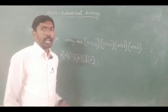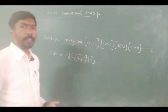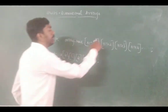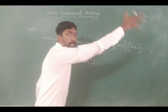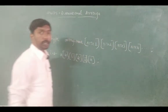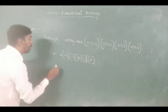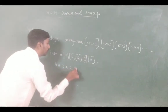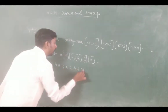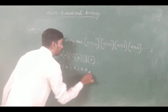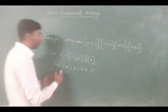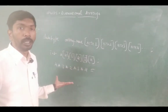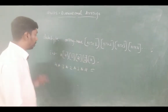This is the multidimensional array. The maximum number of elements we can store is size1 × size2 × size3 × size4 × size5. For example: 4 × 3 × 2 × 3 × 4. This is the number of elements we can store.